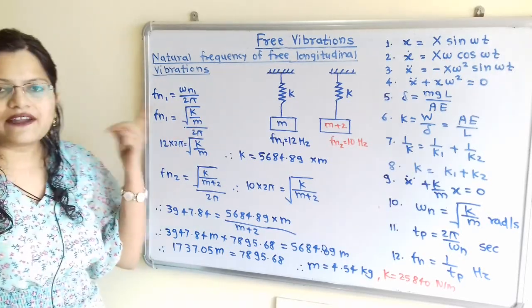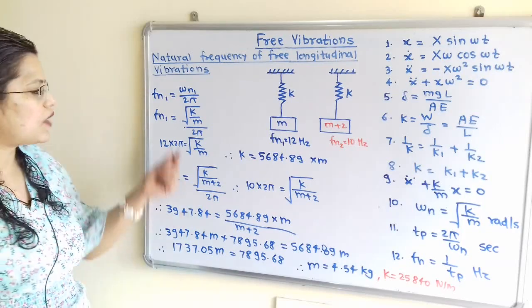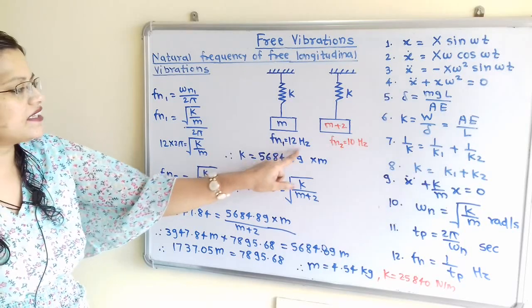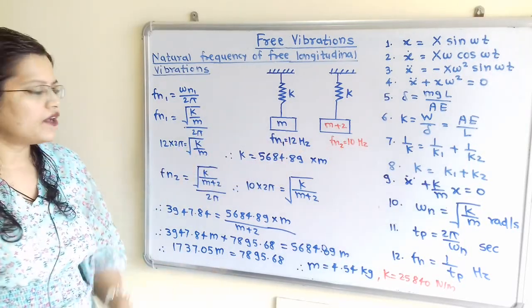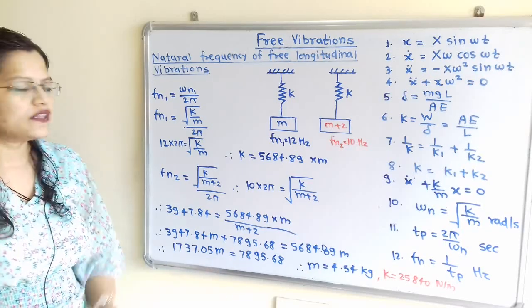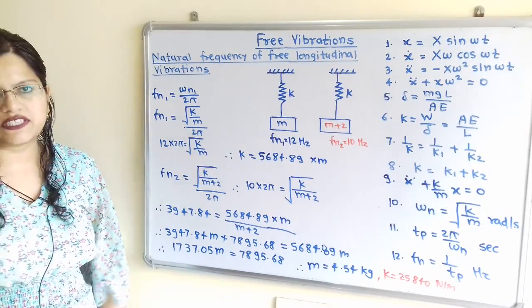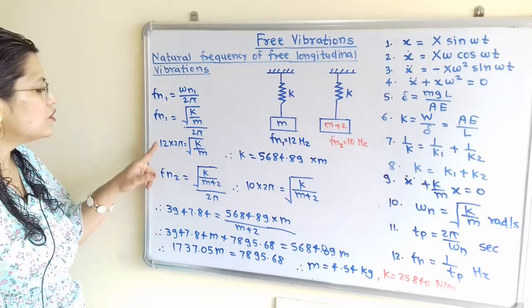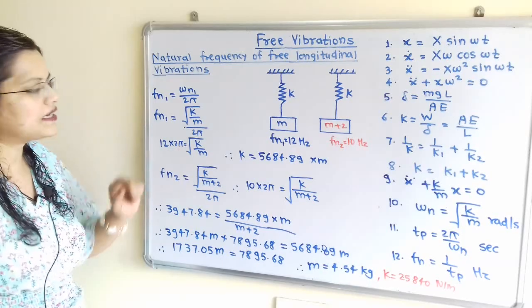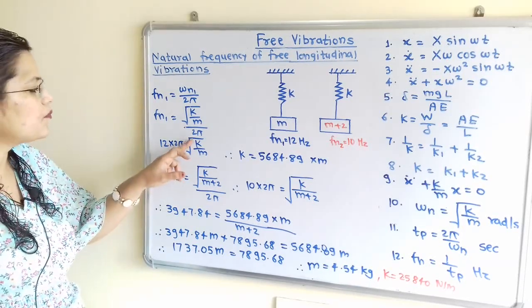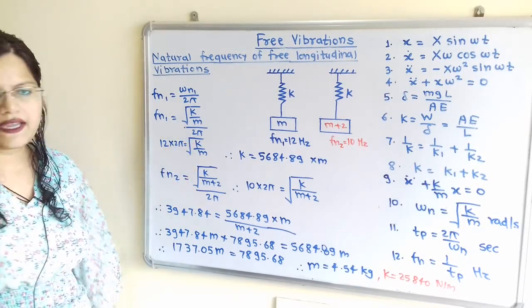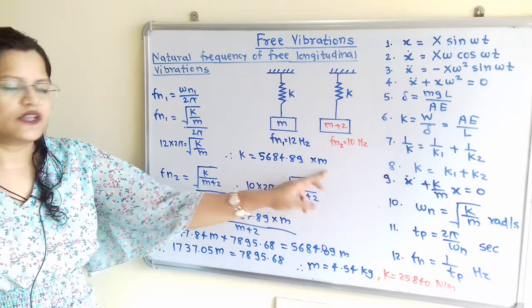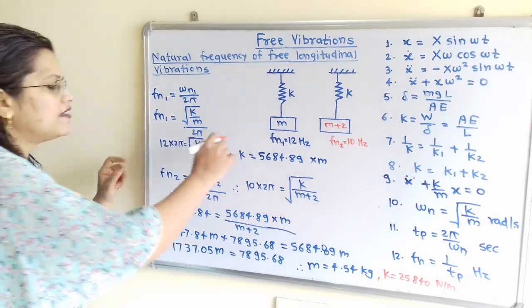Transferring 2 pi to the left-hand side: 12 Hz multiplied by 2 pi equals under root of k by m. Squaring both sides cancels the square root: 12 multiplied by 2 pi, all squared, equals k divided by m. Therefore k equals 5684.89 into m. This is the value of k in terms of m.